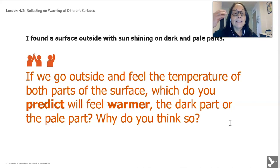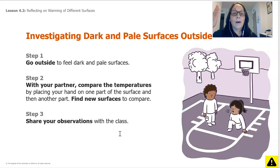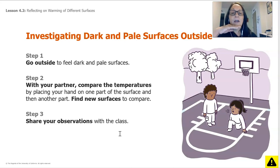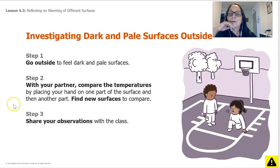Scientists are always trying to figure out why things are that way. You're going to go outside with an adult or an older brother or sister. With your partner, compare temperatures by placing your hand on one part of the surface and then the other part. Try different surfaces to compare, and then share your observations with the person you're going outside with.